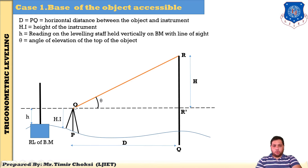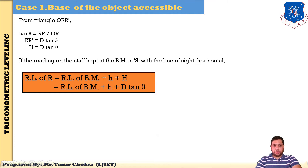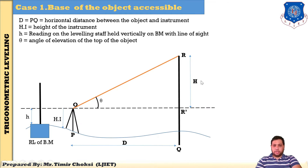So now, from triangle O, R, R-dash — you know that tan theta equals opposite side divided by adjacent side, so RR-dash divided by OR-dash. RR-dash is H and OR-dash is capital D. So you can easily simplify this formula and get the answer: H equals D tan theta. So our formula is H = D tan theta, meaning capital X equals D tan theta.